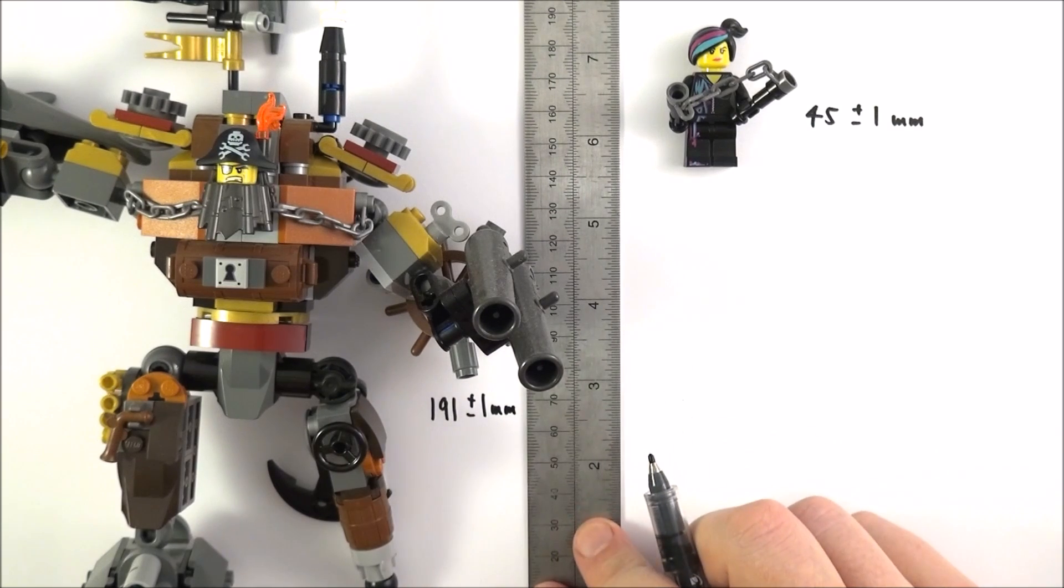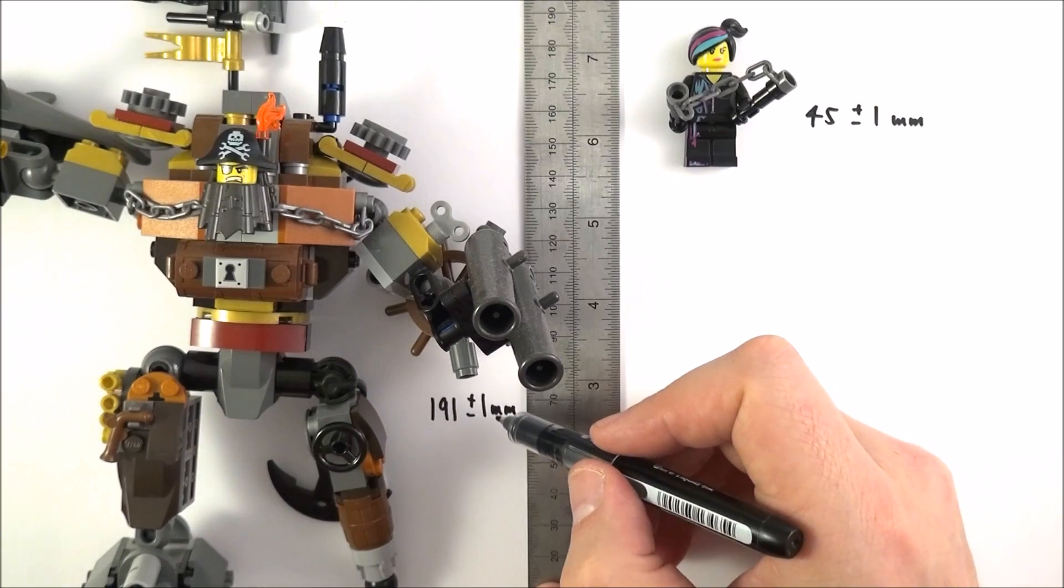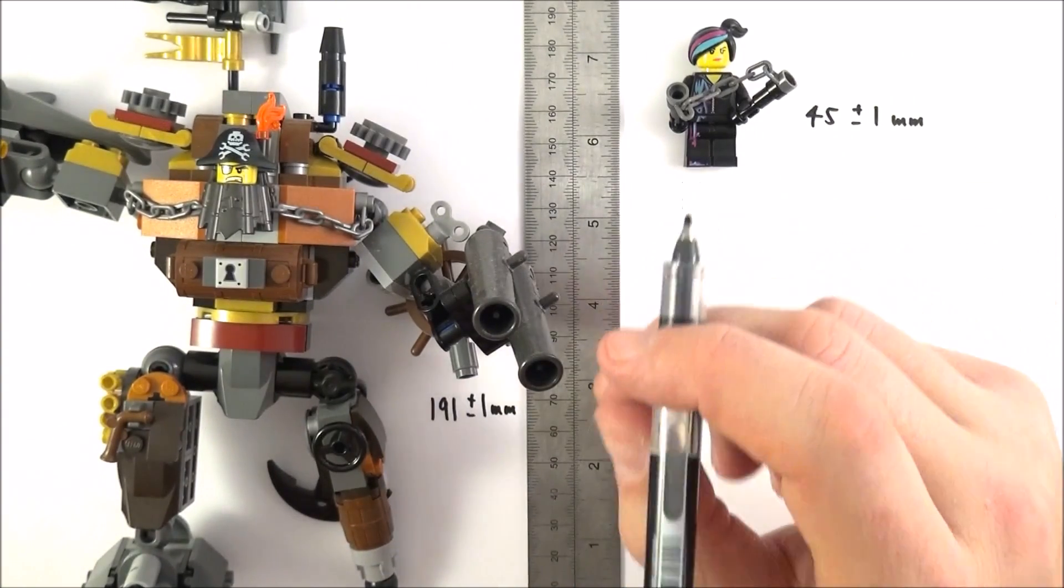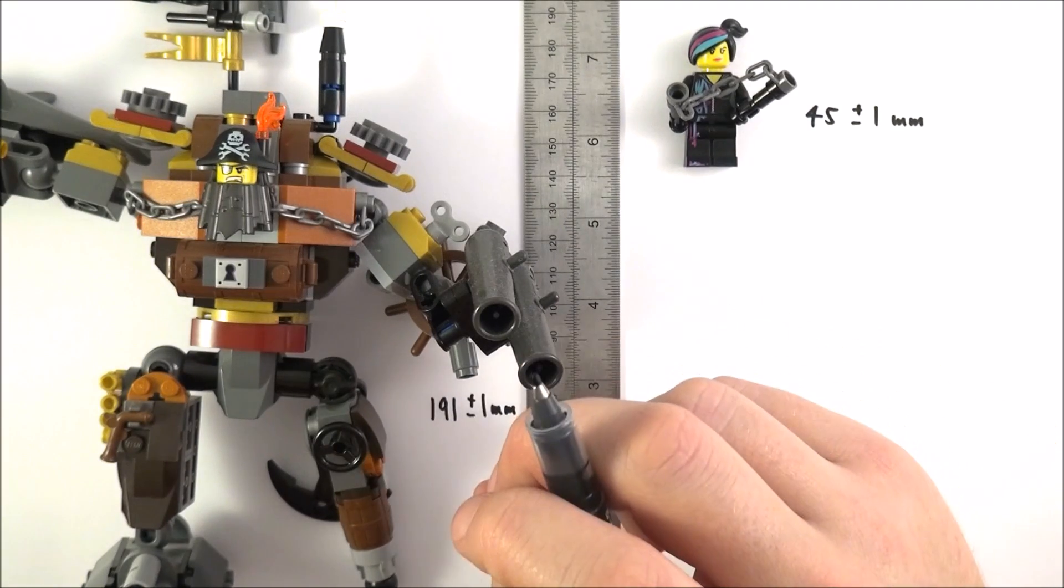Now that means that these two objects both have the same absolute uncertainty. But what I think is sometimes more useful to look at is the percentage uncertainty in these measured values.